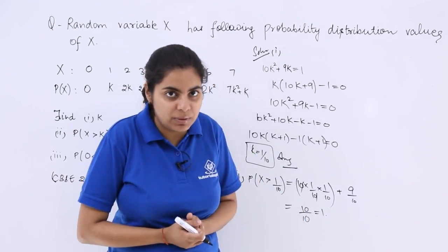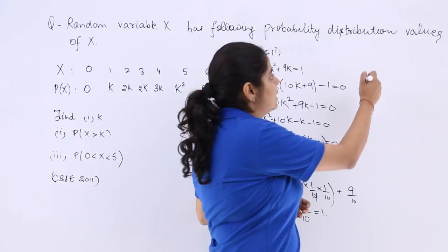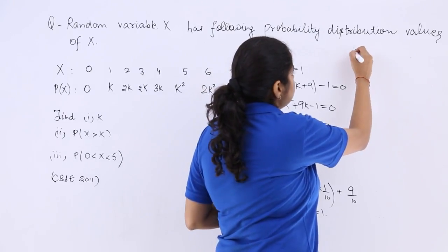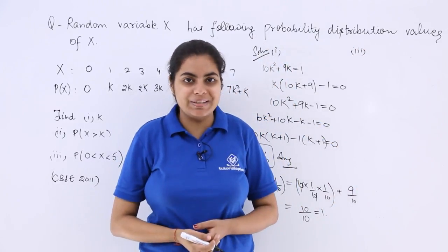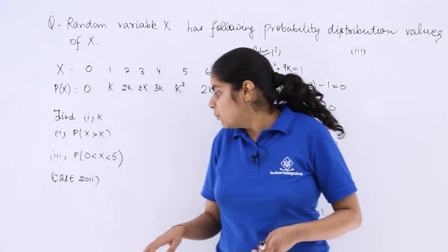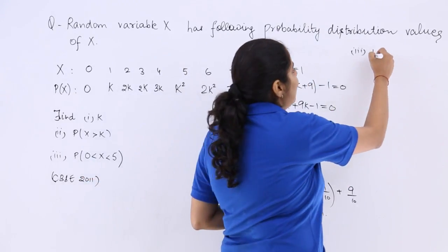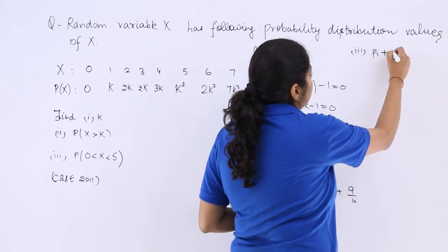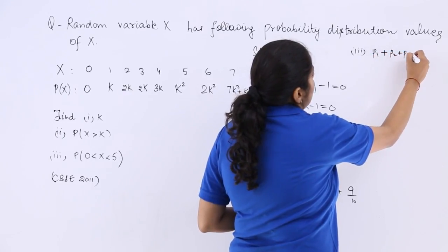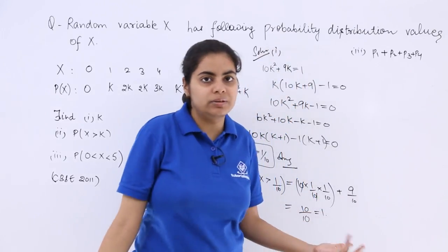Now what about the third part? For the third part, let's make some space here and let's see how to do it. So it says probability X which lies between 0 to 5. So it will have probability where X is equal to 1, where it is equal to 2, where it is equal to 3, and where it is equal to 4.